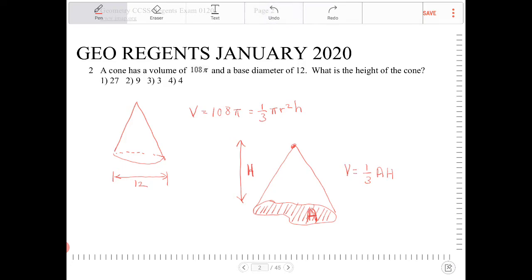Anyway, so volume equals 108π equals 1/3 πr²h. And the task is to find out what the height of the cone is.